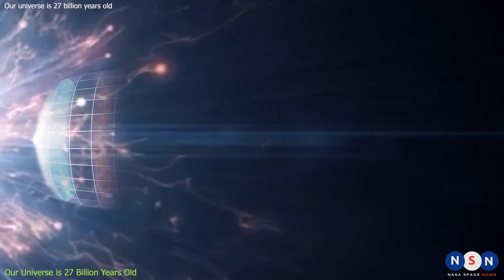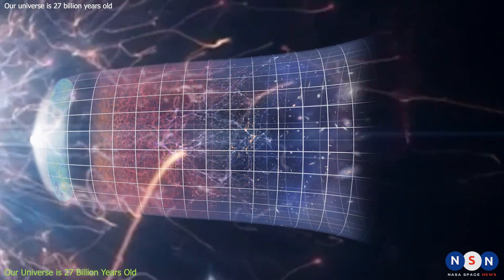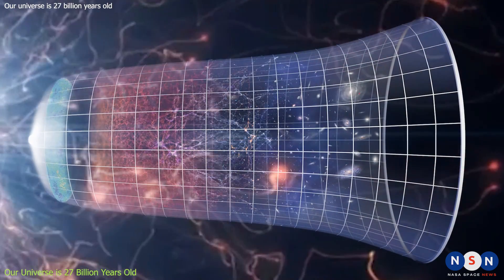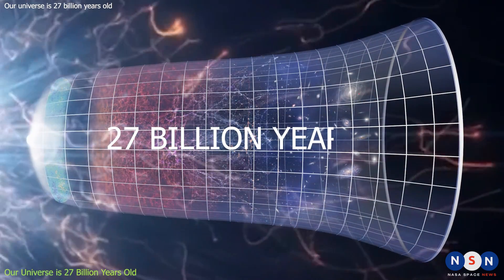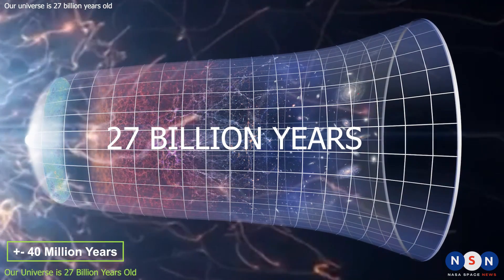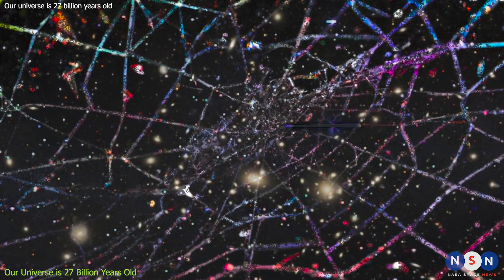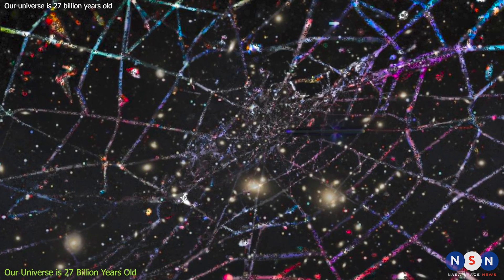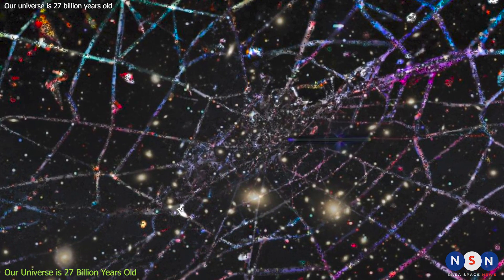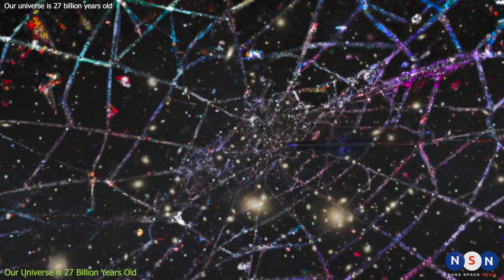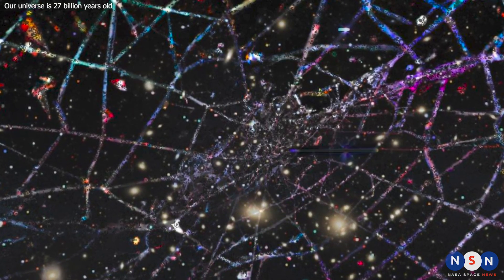By applying his model to various observations and data, Gupta arrives at a new value for the age of the universe, 27 billion years, with an uncertainty of about 40 million years. This value is consistent with his model, but not with our current theories and assumptions. So, who is right? And what does this mean for our understanding of the cosmos?